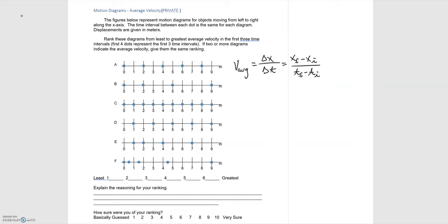It says to rank the average velocity from least to greatest in the first three time intervals. The first four dots represent the first three time intervals. So in each diagram we're going to mark the first three time intervals and that's represented by the first four dots.